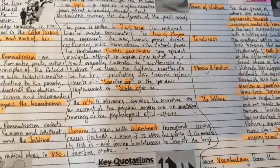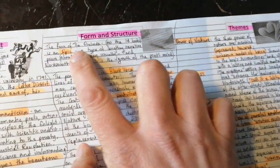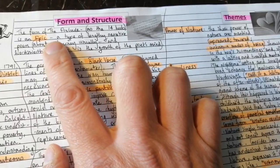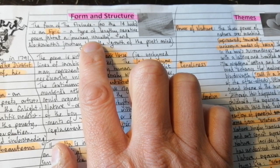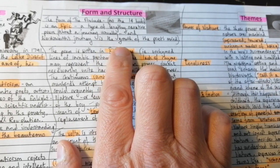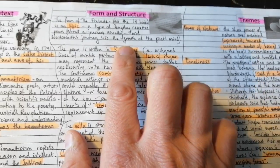So form and structure, just very quickly. The form of the prelude as 14 books is an epic. That is a type of lengthy narrative poem that's about a journey usually. And Wordsworth's journey is the growth of the poet's mind.